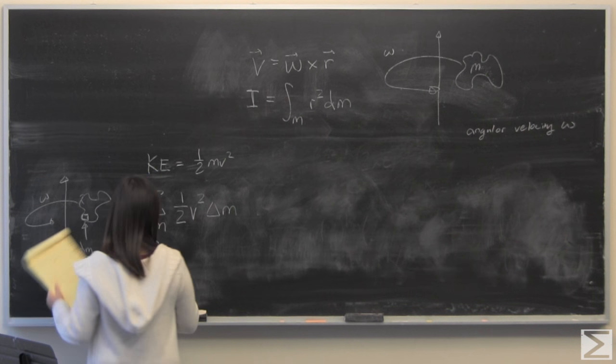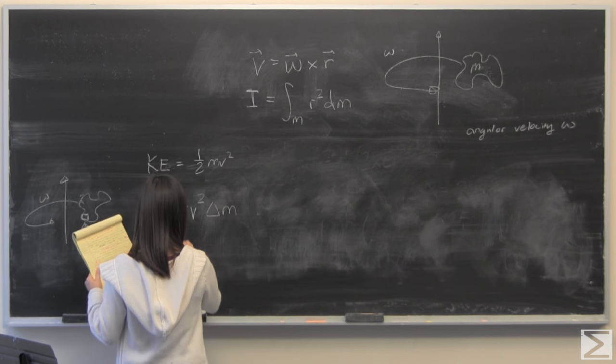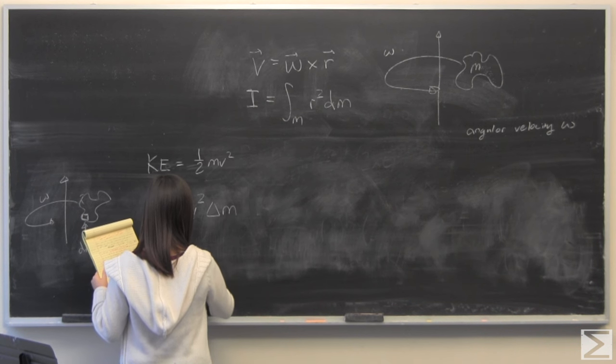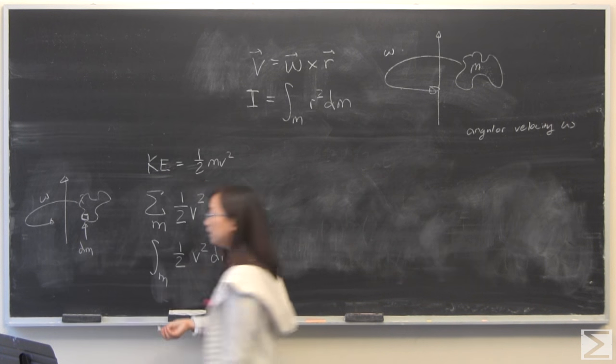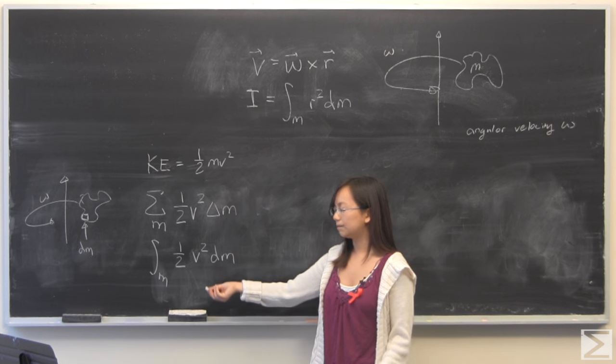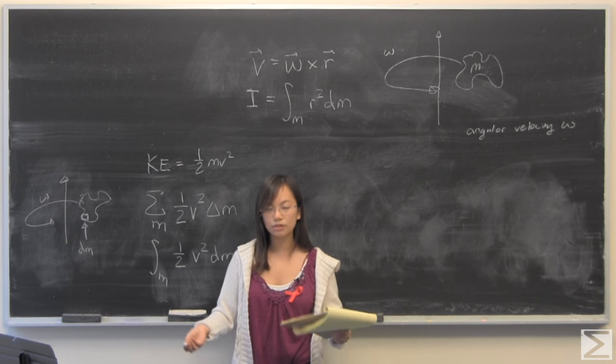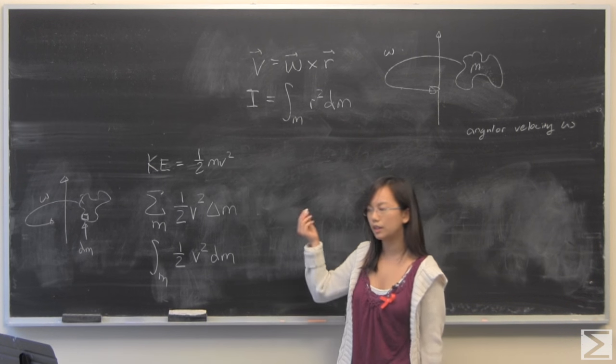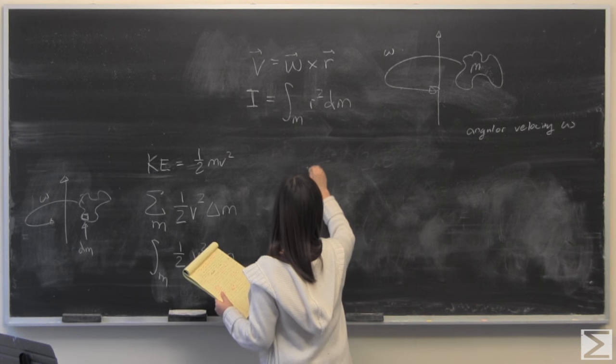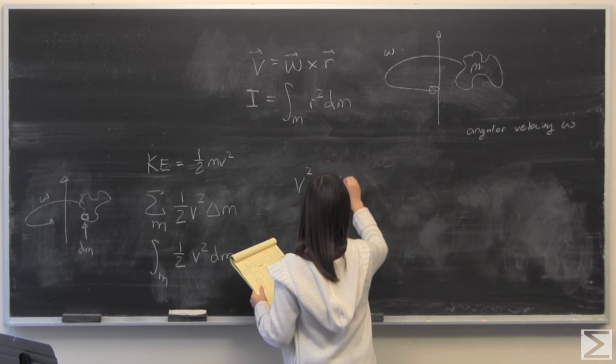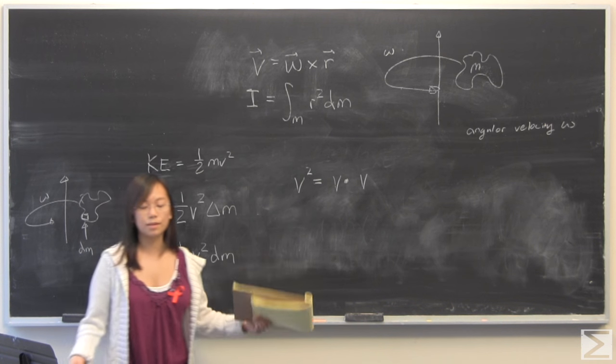I'm going to turn this into the integral by letting dm become infinitely small. If you've taken a calc 2 class, you've probably seen this before. We have the integral of 1/2 v² dm. How are we going to maneuver with this? We are going to recognize that velocity is a vector, and velocity squared in this case, we're going to say that's v dot v. We know that by properties of vectors.